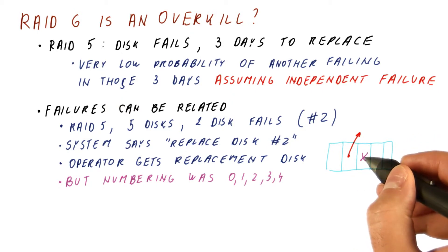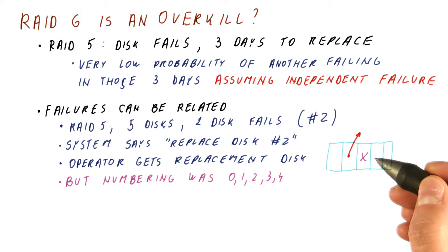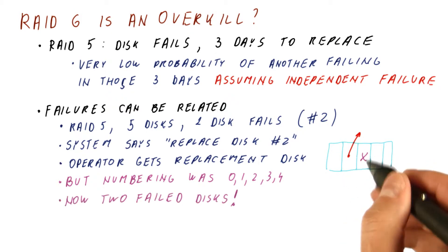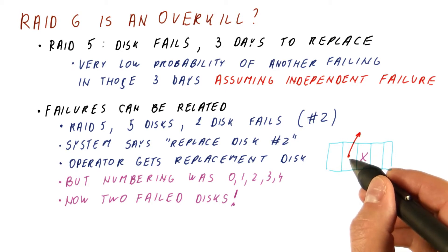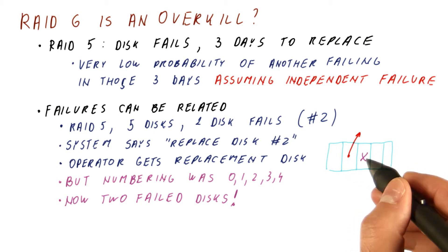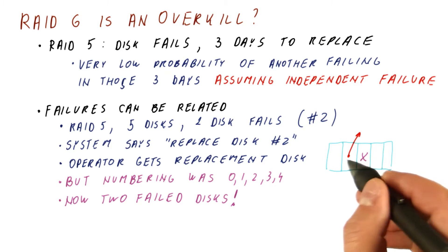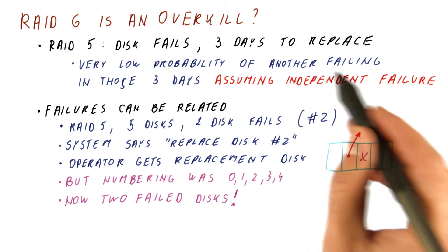The one they pulled out was actually the working disk — that removal was the second failure. Now there are really two failed disks: one failed because it failed, and the other failed in the course of trying to repair the first failure. That's an example of correlated failures, and in that case we cannot assume independence.